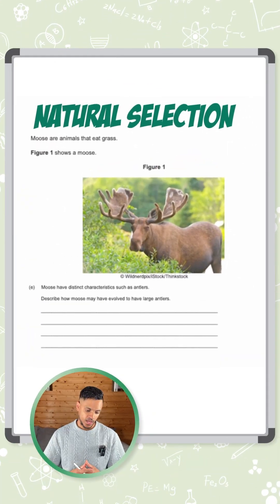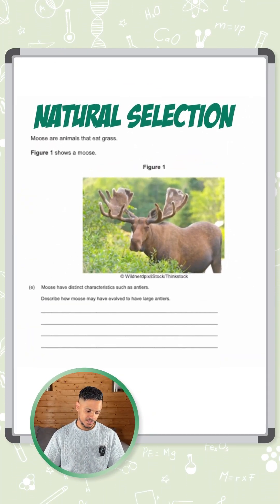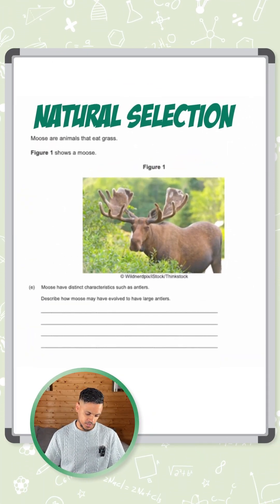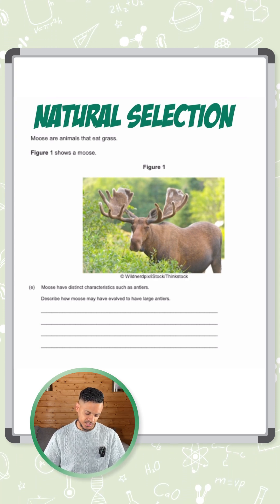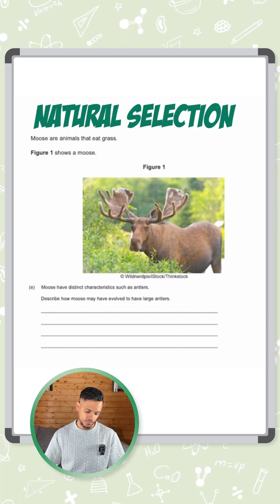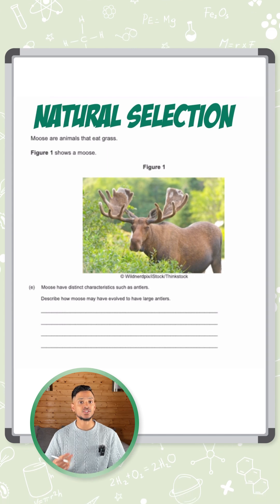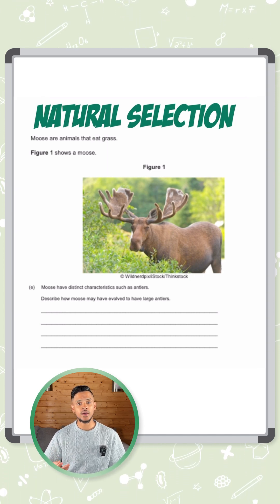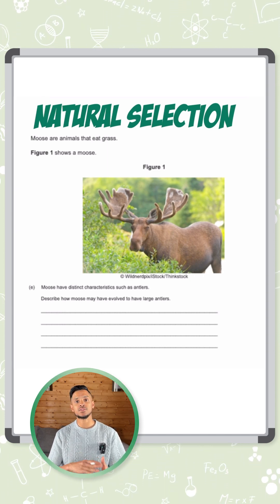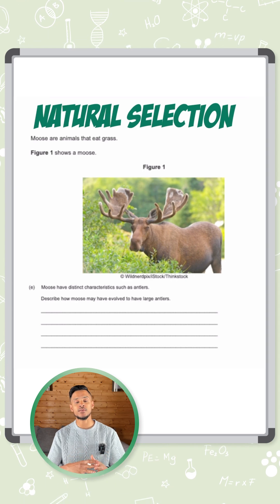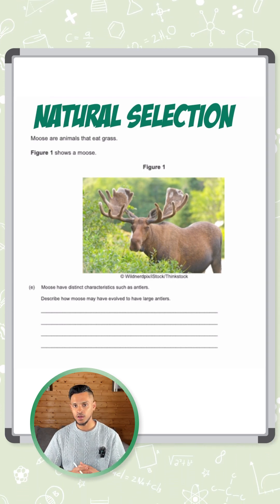This is a question about natural selection and variation. It says moose are animals that eat grass and have distinct characteristics such as antlers. Describe how moose may have evolved to have large antlers. You need to talk about how they got the first antlers in the first place, and how they evolved so that the majority of their population also have large antlers.